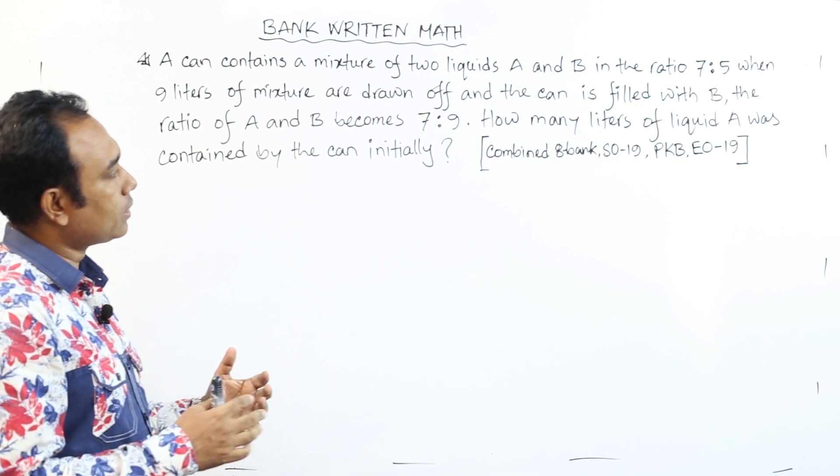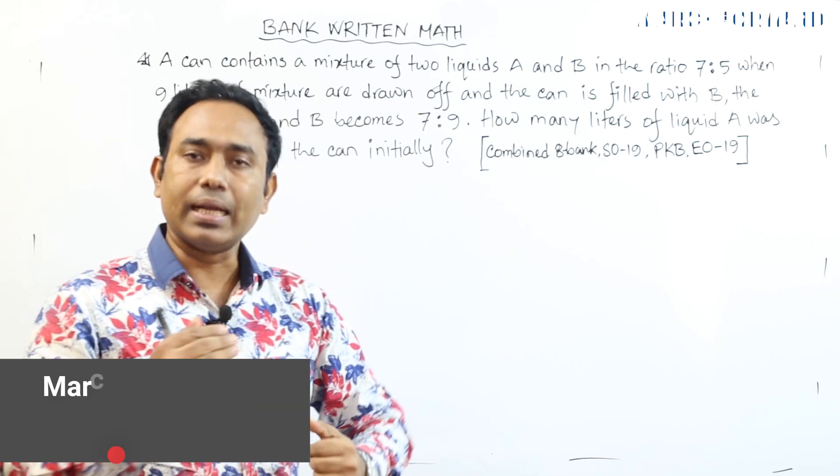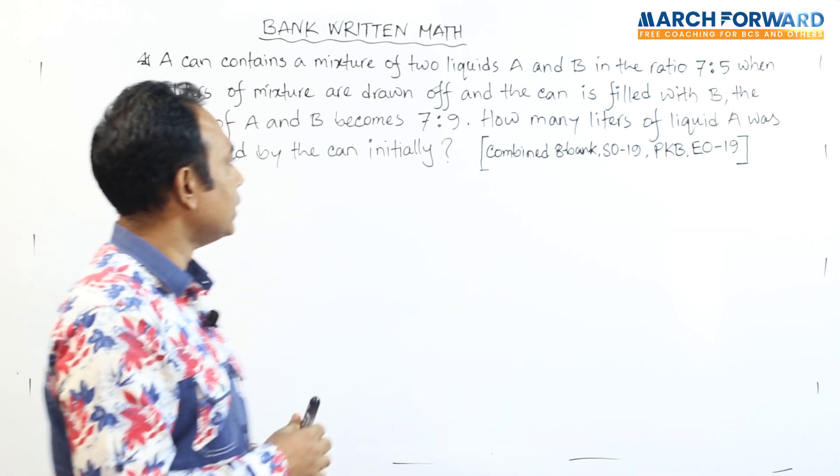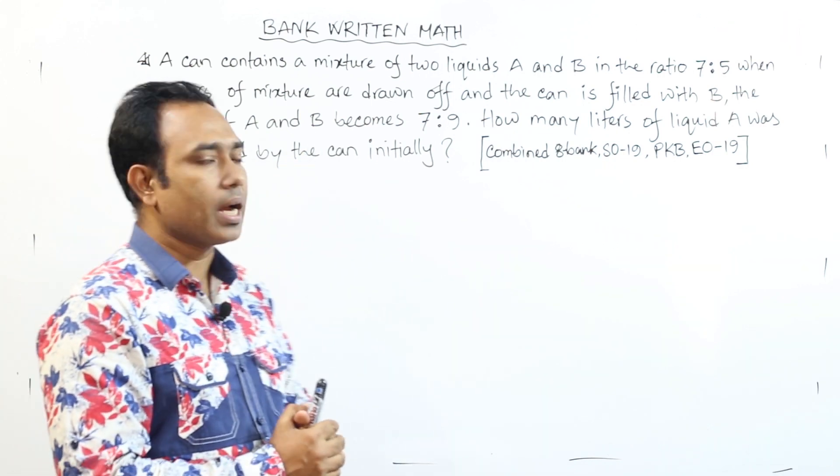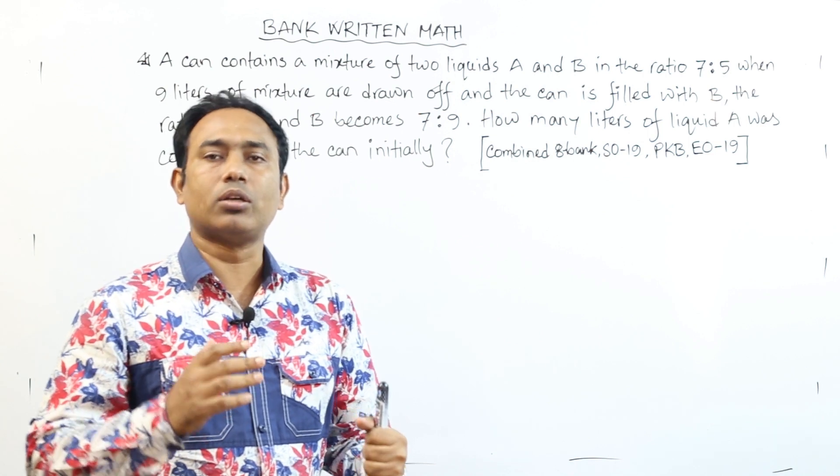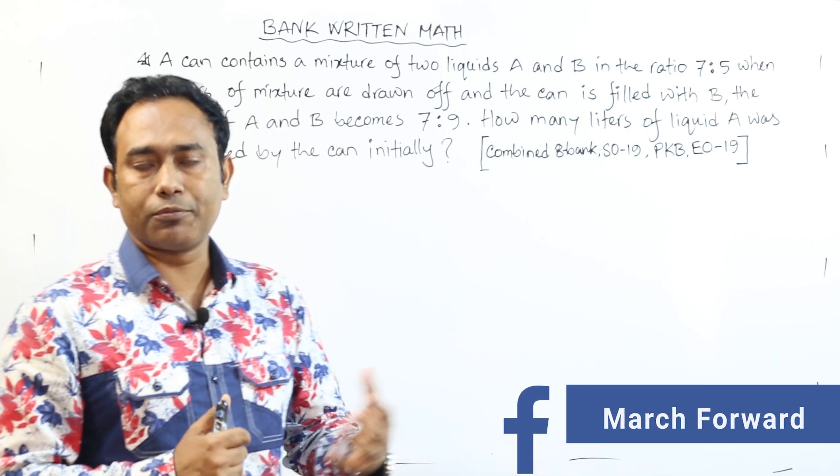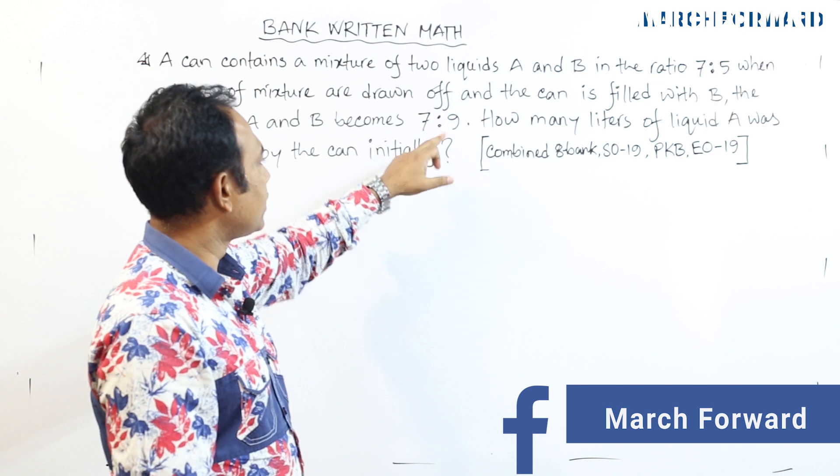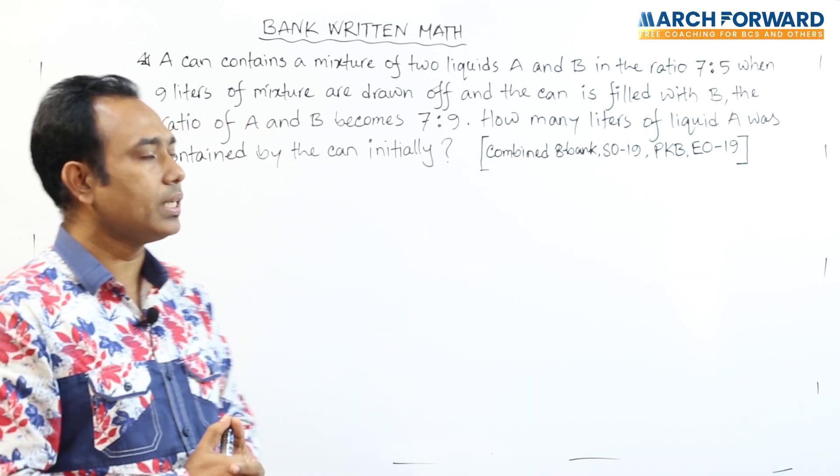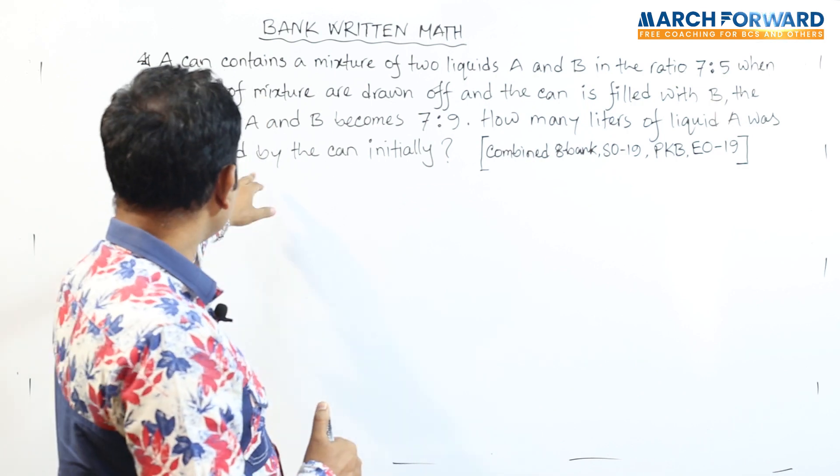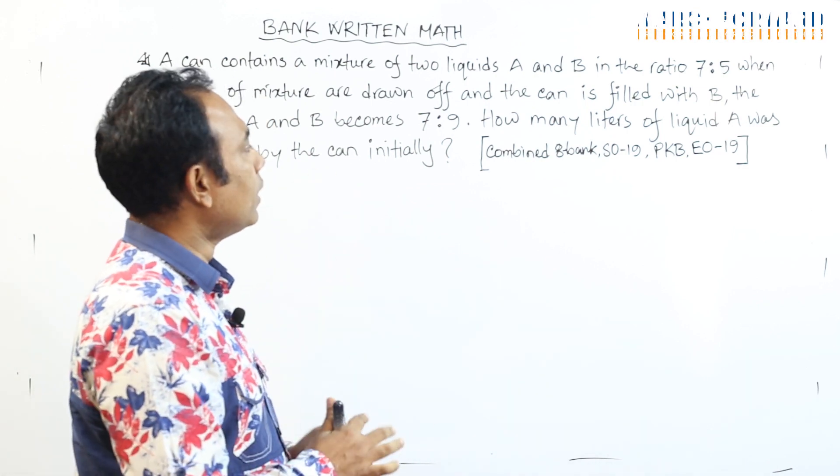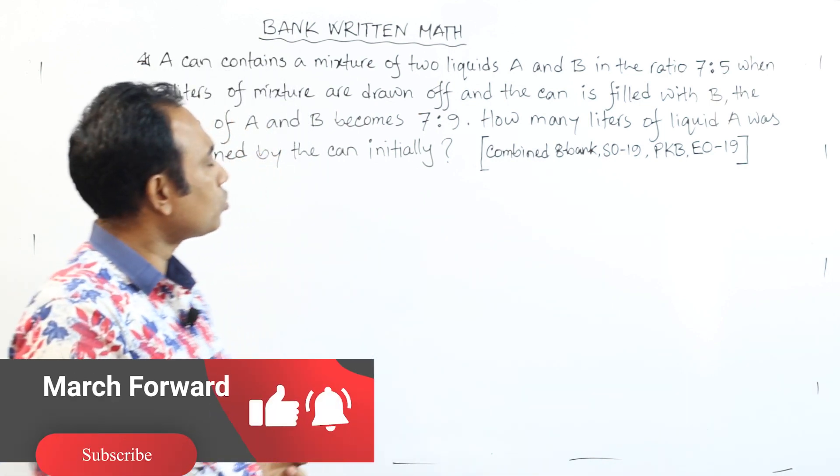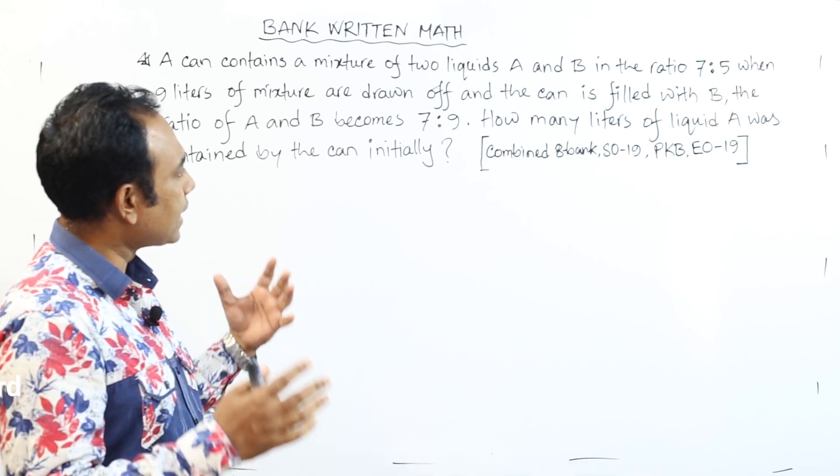If the can is filled with B, the ratio of A and B becomes 7 to 9. The question is: How many liters of liquid A was contained by the can initially? This is a standard math. The math is written repeatedly. This is step by step. The math is clear.